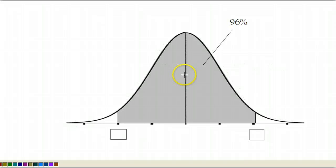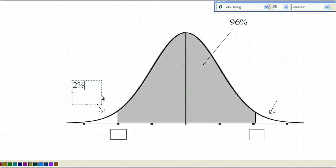And because this thing is perfectly symmetric right here at the middle, at the mean, that means that down here is 2% of that remaining 4%. And up here is the other 2%.